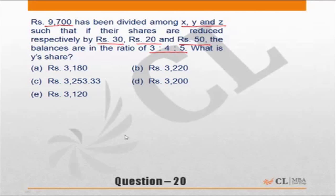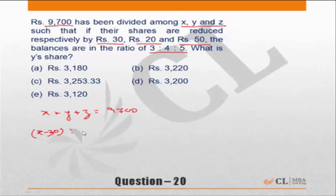Let us write down what we are supposed to do. The first equation is x plus y plus z is equal to 9700. The second condition is that if x, y and z are reduced by 30, 20 and 50 respectively, then x minus 30 is to y minus 20 is to z minus 50 will be equal to 3 is to 4 is to 5.